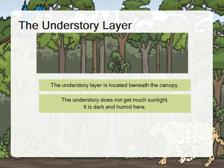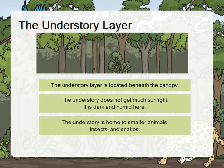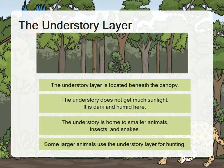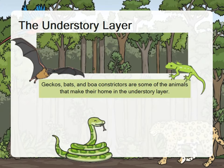The understory does not get much sunlight — it is dark and humid. The understory is home to smaller animals, insects, and snakes. Some larger animals use the understory layer for hunting. Geckos, bats, and boa constrictors are some of the animals that make their home in the understory layer.